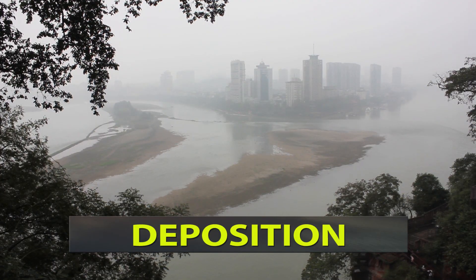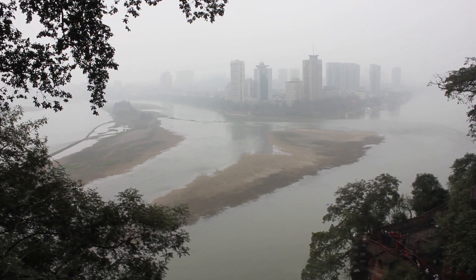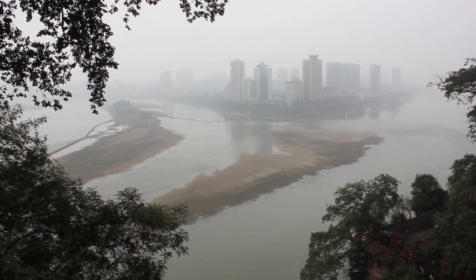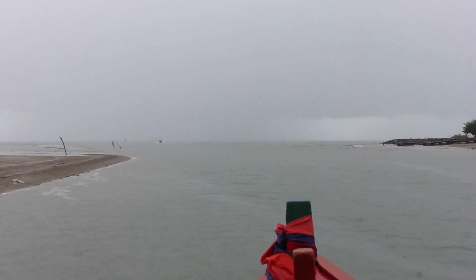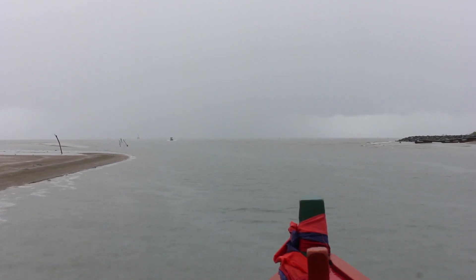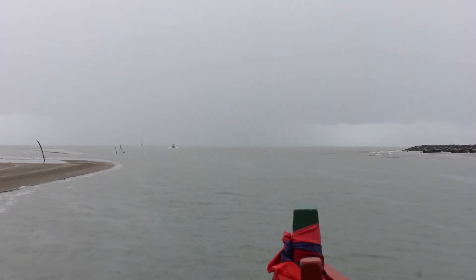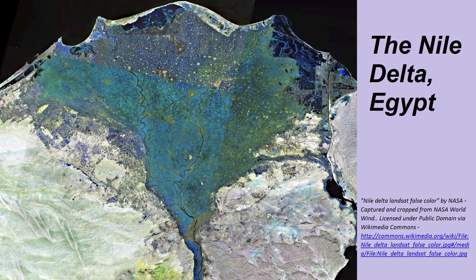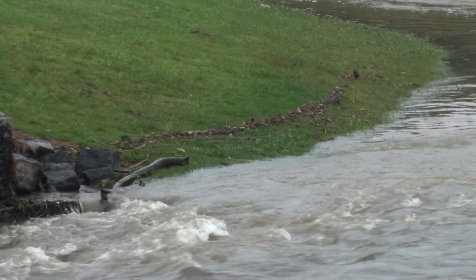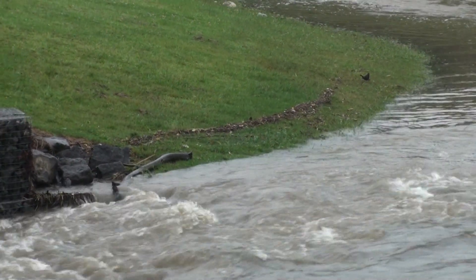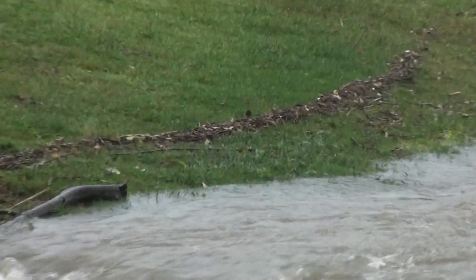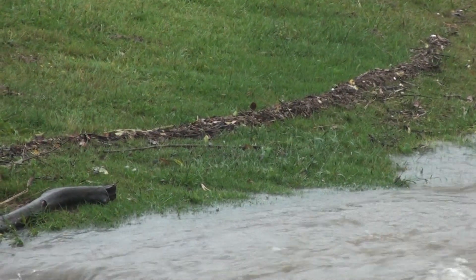Deposition. When a river loses energy, it will deposit some of the load it is carrying. Energy levels are lowest when rivers meet the sea or a lake and slow down, causing a lot of deposition to take place. Deposition features such as deltas can form in these places. Deposition also takes place when the volume of water decreases, as happens at the end of a flood or during a time of drought.